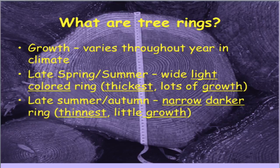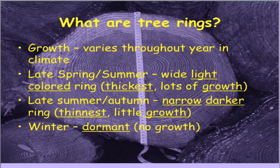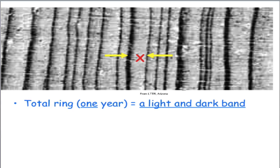During late summer and fall, conditions change to less sunlight and drier conditions. This is reflected in the tree rings — during this time, trees produce narrow, dark rings indicating little growth. Trees go dormant in the winter, producing no ring at all. Most of you have counted tree rings to figure out how old trees are. Hopefully you counted both the dark and the light rings together to count as one year or one growing season.